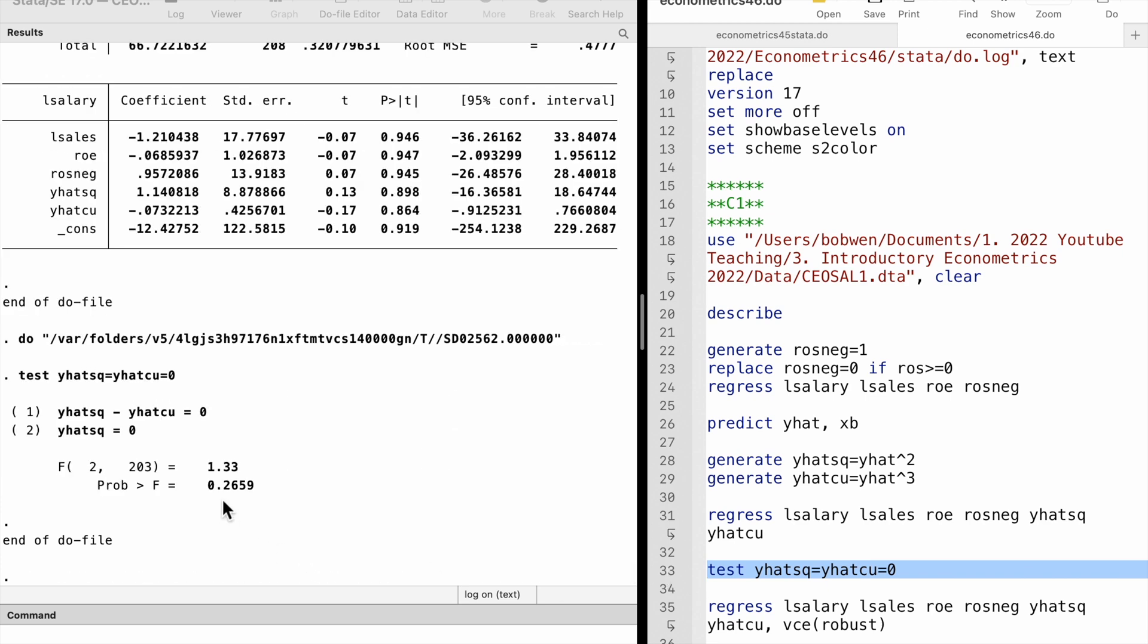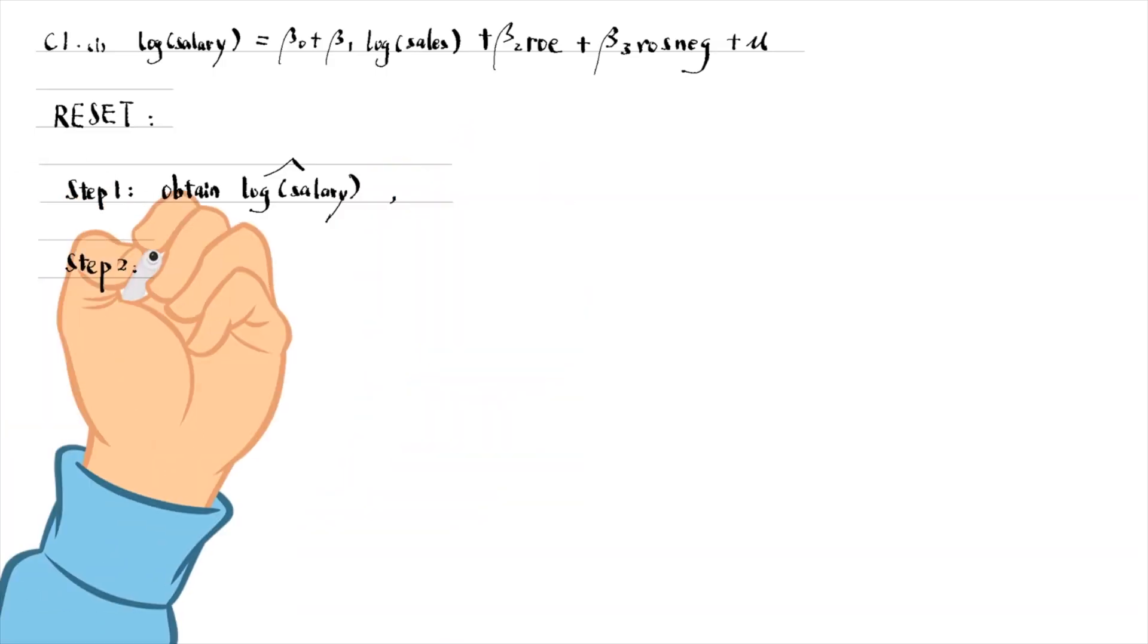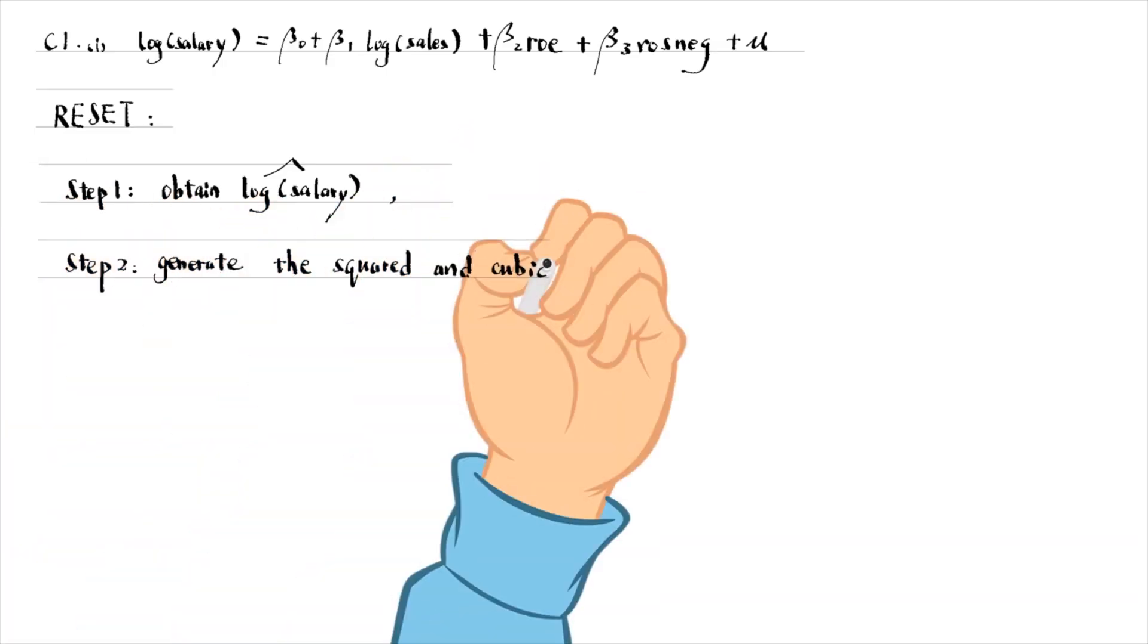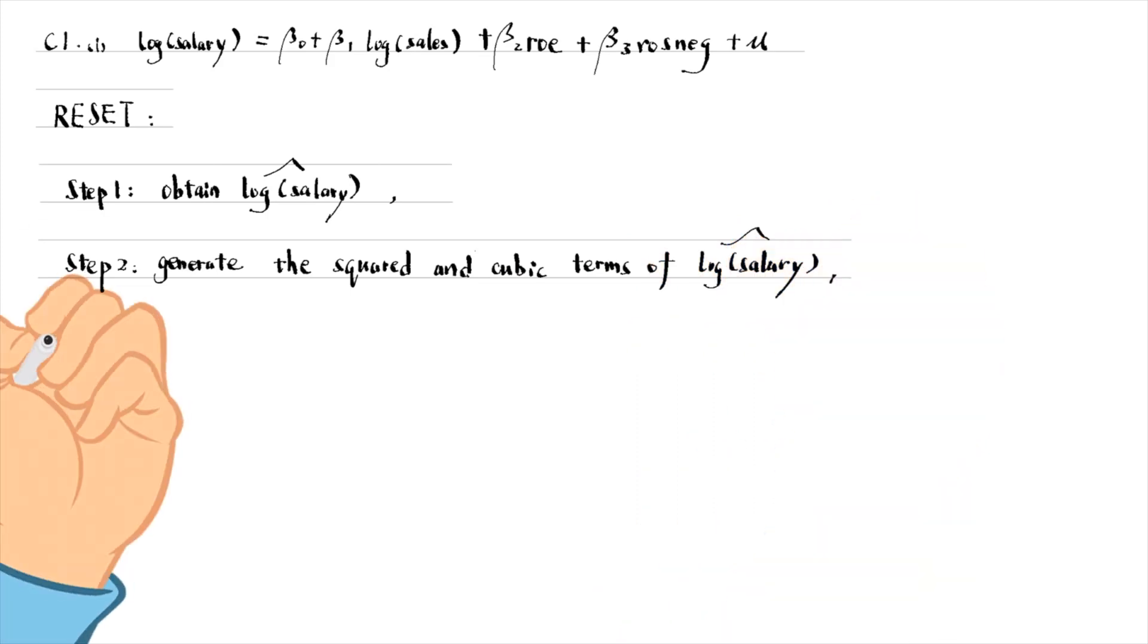The F-statistic is 1.33 and its p-value is 0.27. We fail to reject the null hypothesis that both delta 1 and delta 2 are zero at any conventional level. There is no evidence of functional form misspecification in the original model.